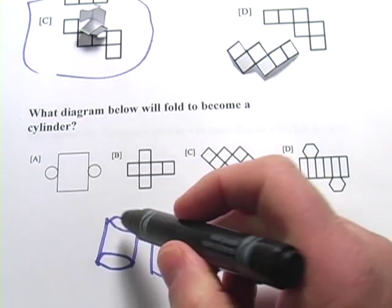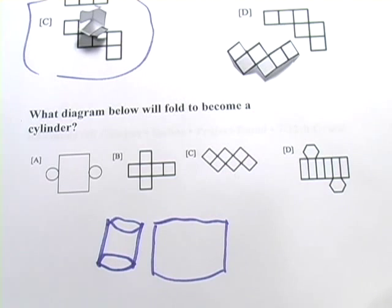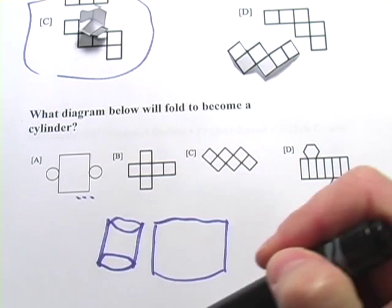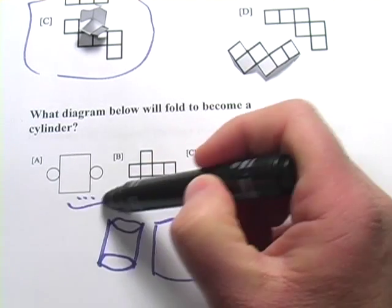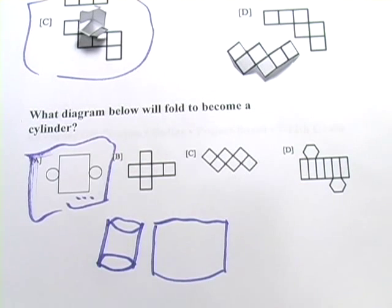So you'd have a rectangle and then the two circular tops and bottoms. So hopefully you can see that's going to be this. So this is the diagram that would fold up to become a cylinder.